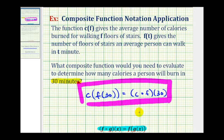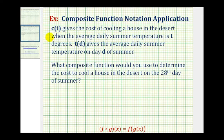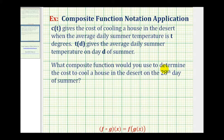Let's take a look at a second example. C of t gives the cost of cooling a house in the desert when the average daily summer temperature is t degrees. T of d gives the average daily summer temperature on day d of summer. What composite function would you use to determine the cost to cool a house in the desert on the 28th day of summer?